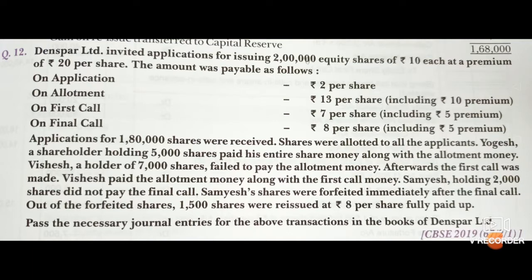On application, Rs.2 per share was taken. On allotment, Rs.13 per share including Rs.10 premium. On first call, Rs.7 per share including Rs.5 premium. And on final call, Rs.8 per share including Rs.5 premium. Total: 2 plus 13 plus 7 plus 8 equals Rs.30. So the issued price is Rs.30 after adding Rs.20 premium to face value Rs.10.